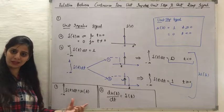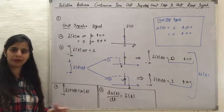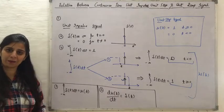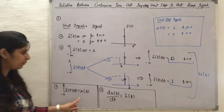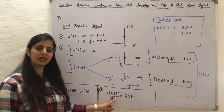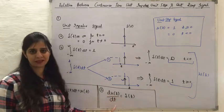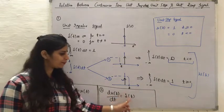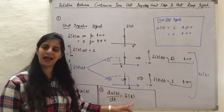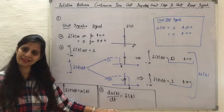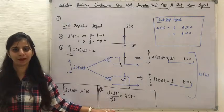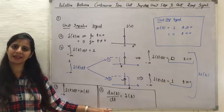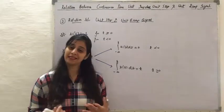When this is true, the inverse is also true. That means when we differentiate the unit step signal, we will get the unit impulse signal. This is the relationship between the unit impulse signal and the unit step signal.